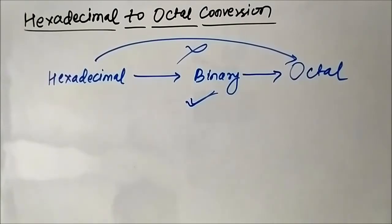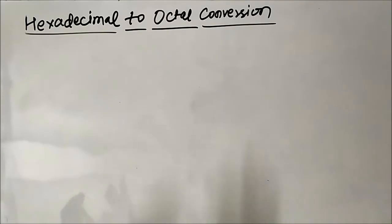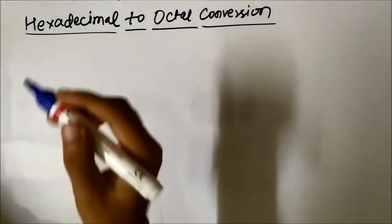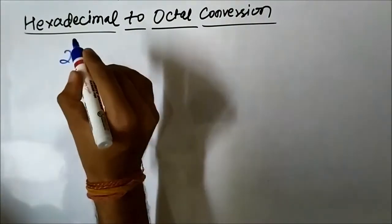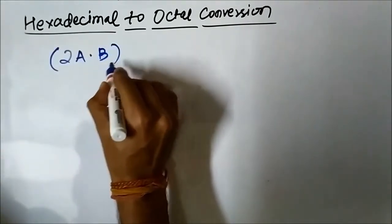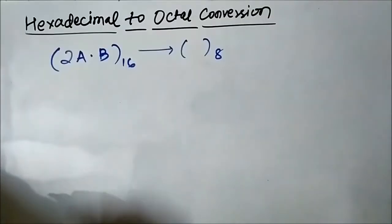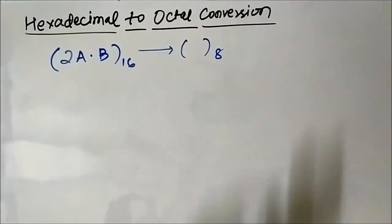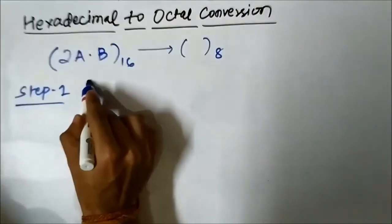Let us see how we are going to do that with the help of an example. We will take the hexadecimal number 2A.B and convert it into octal form. As mentioned, we divide this process into two parts. Step 1 is hexadecimal to binary conversion.